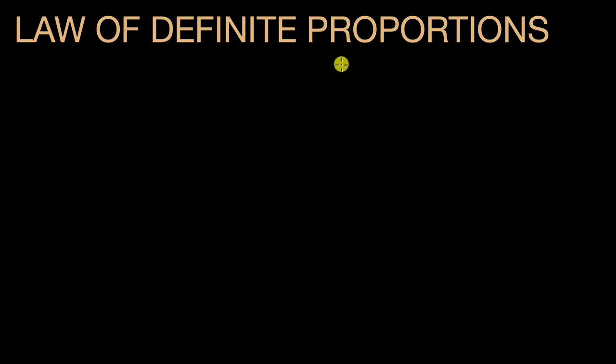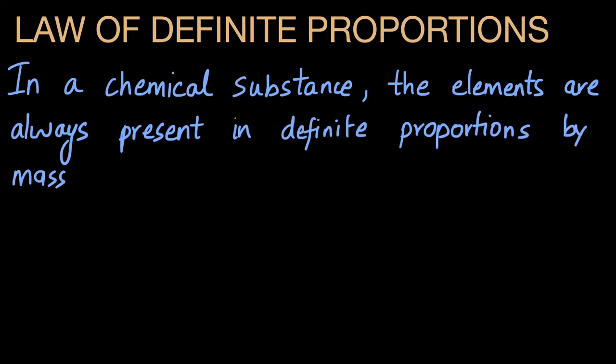Let's talk about the law of definite proportions, or it's sometimes called law of constant proportions. This law states that in any chemical substance, the elements are always present in definite proportions by mass. Instead of proportions, we can call them ratio to make the definition simpler, so we can say that the elements are always present in definite or constant ratio by mass.